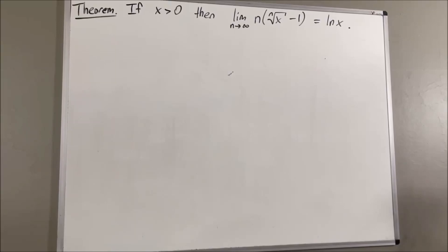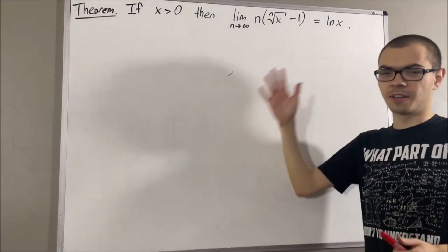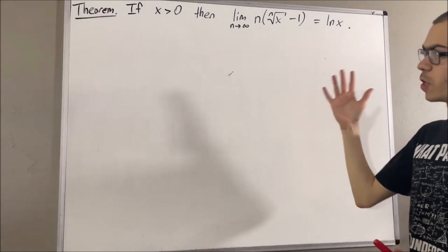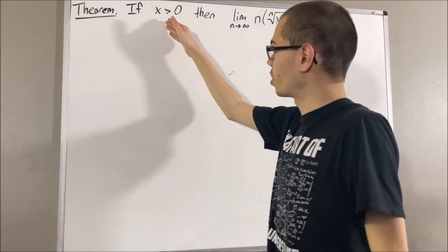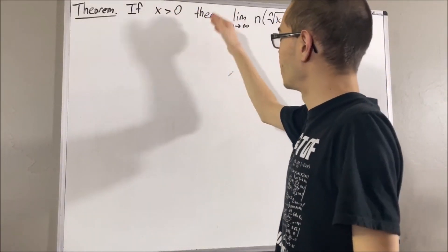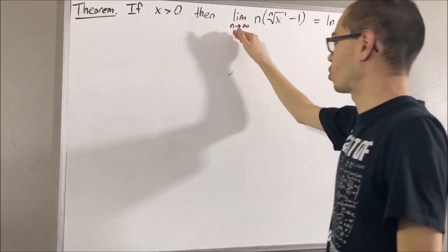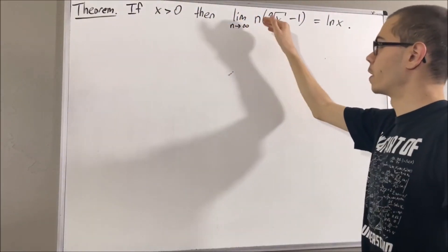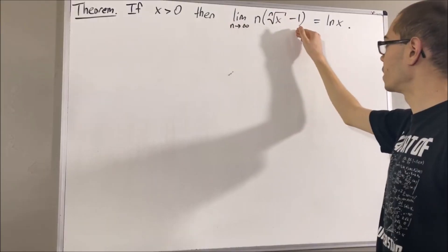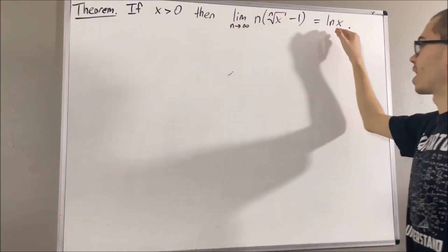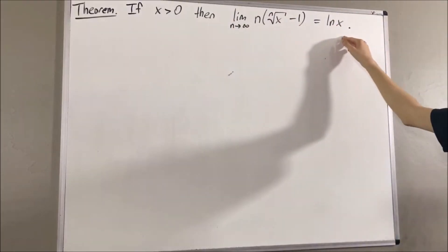Hello! In this video, we are going to prove the following theorem: if x is greater than zero, then the limit as n approaches infinity of n times the n-th root of x minus 1 is equal to the natural log of x.